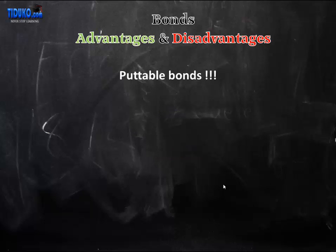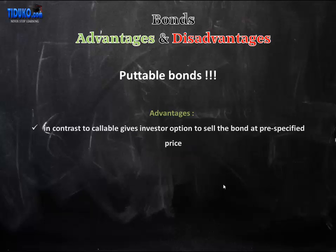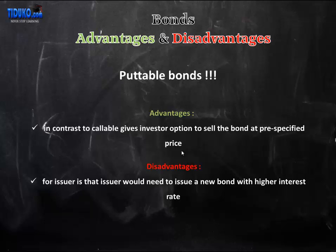In contrast to the callable bond, we have a putable bond. The putable bond gives the investor an option to sell the bond at a pre-specified price. If the market rate goes above the coupon rate, the investor has the choice of selling the bond back to the issuer before the maturity date, giving them the opportunity to invest at a higher interest rate.